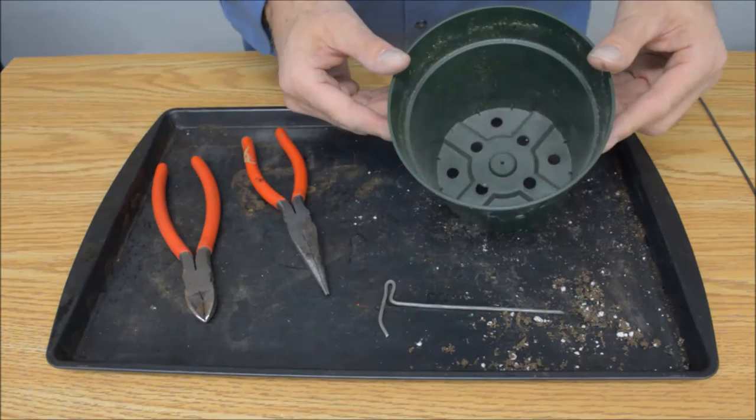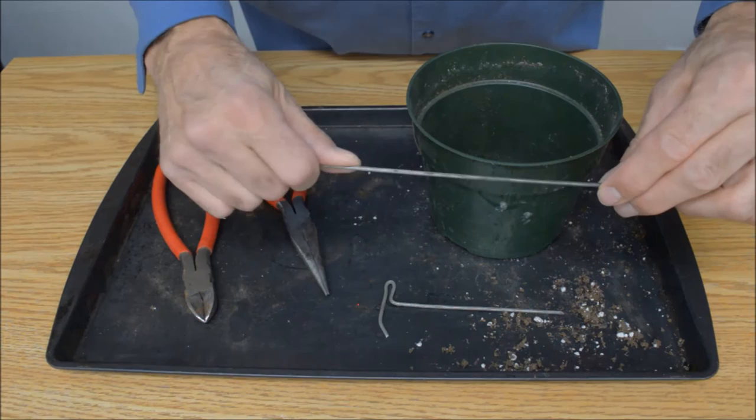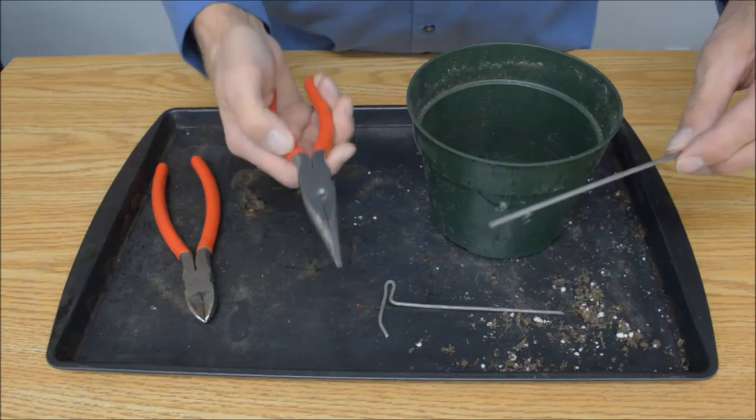You need a pot of the same size that you're going to use. You also need a wire. Now you want this wire to be thick enough so that it doesn't bend easily on its own, but you need it small enough so you can actually bend it. So this size works quite well.